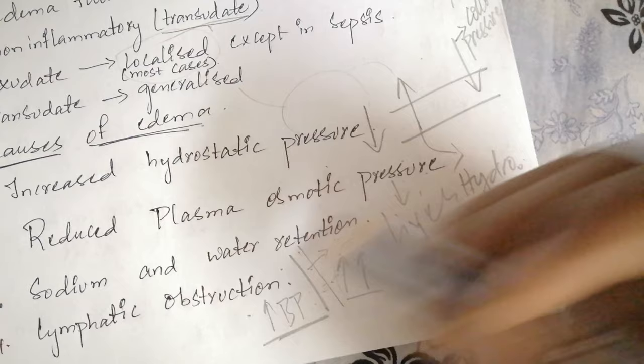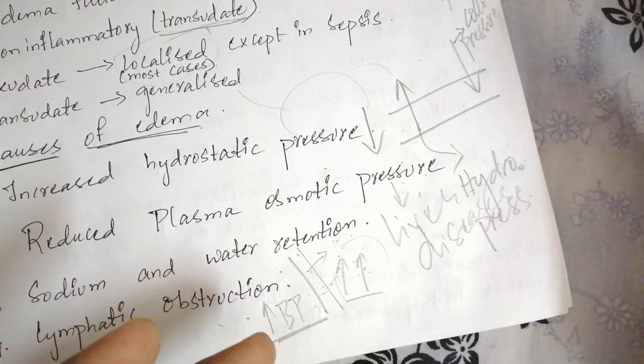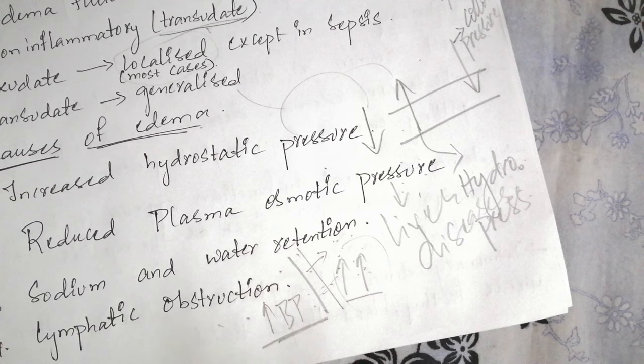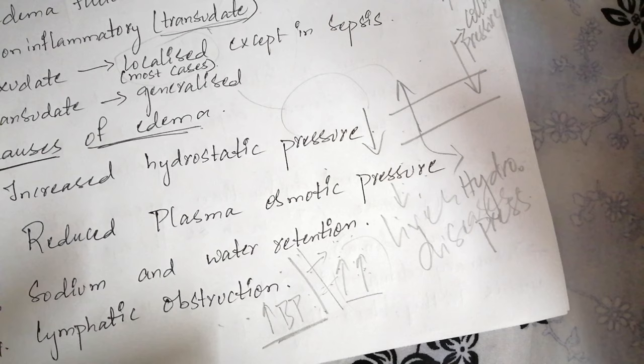The fourth cause of edema is lymphatic obstruction. This is mainly due to fibrosis, invasive tumors, and infections that can disrupt the lymphatic vessels and impair the drainage mechanism of the interstitial fluid, resulting in lymphedema — edema localized to the affected part of the body where the lymphatic drainage system has been disrupted.